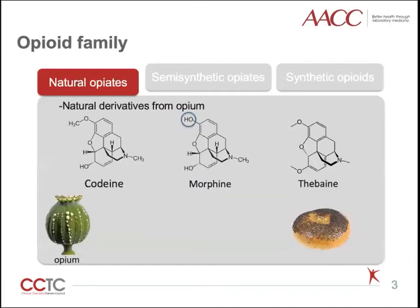The opiate family is defined by their binding capacity to opiate receptors. There are three subgroups, including natural opiates, semi-synthetic opiates, and fully-synthetic opiates. Natural opiates are natural derivatives from opium, like morphine, codeine, and thebaine. Their chemical structures are quite similar to each other. Thebaine is proposed as a marker for poppy seed use because it was absent in powdered drugs and the urine of a true opiate drug user.